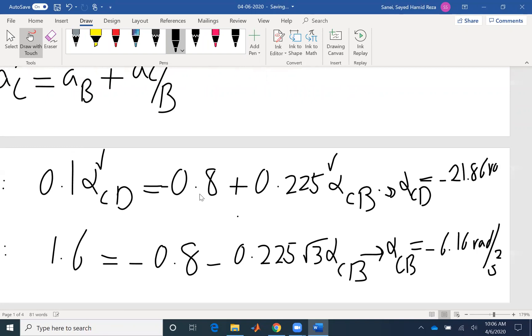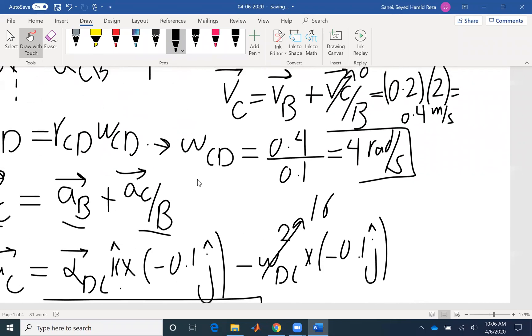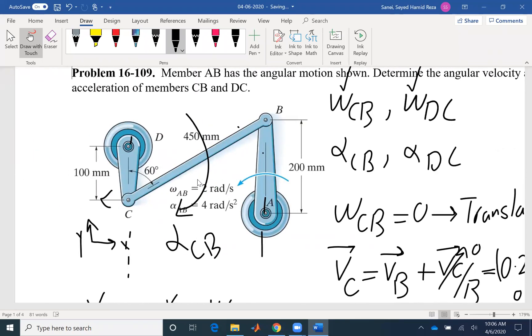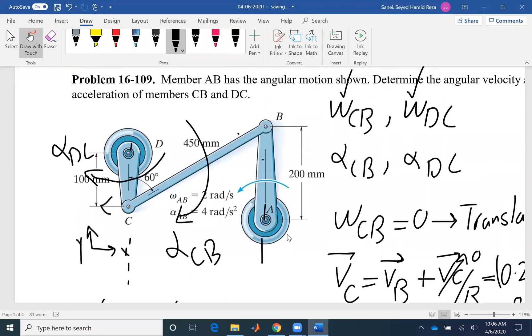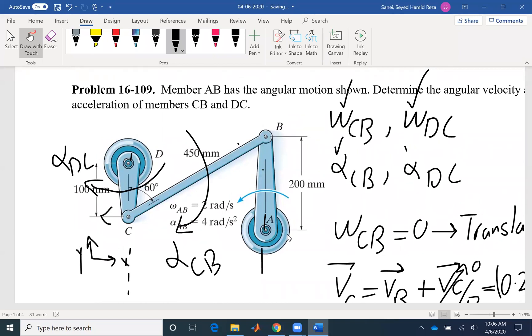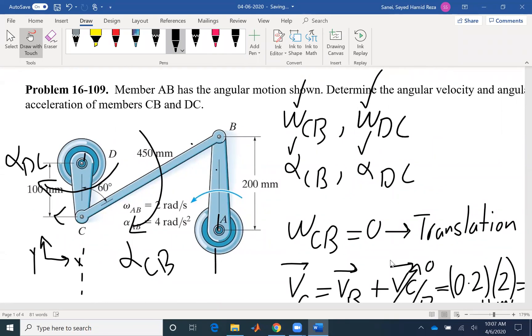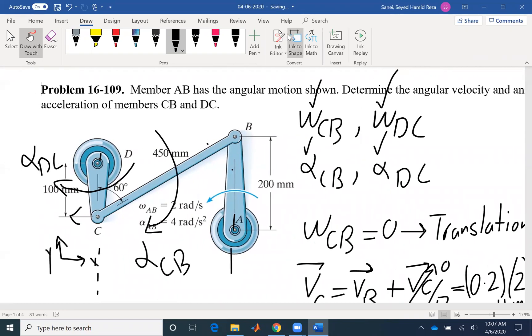Again, I found a negative value which means that counterclockwise direction is incorrect and it's clockwise direction. So here again, by inspection it was obvious that alpha is in this direction, alpha DC. So we found the four unknowns that the problem was asking for. By identifying the IC, we could easily find omega CB. We could write the relative velocity equation as well, but IC method seems to be more efficient for solving this problem.